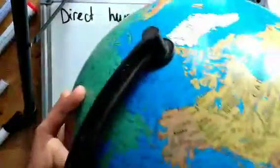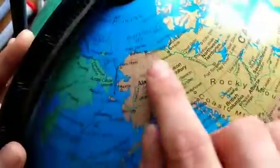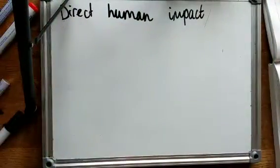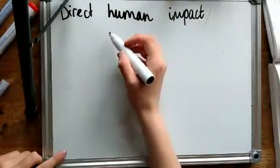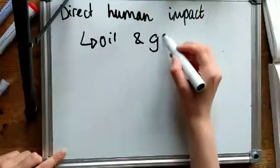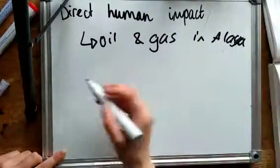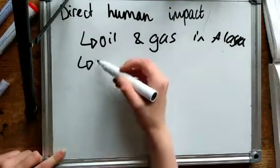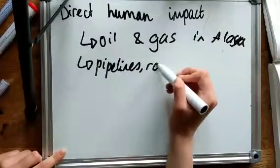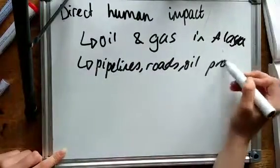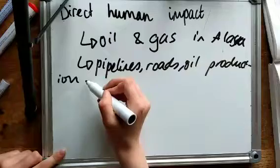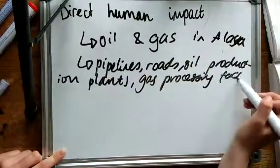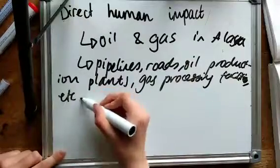So now on to some direct human impacts. So near Prudhoe Bay in Alaska, in the tundra, oil and gas were discovered. So people wanted to get this gas and oil, and so they constructed things such as pipelines, roads to get around the place, oil production facilities and plants, gas processing facilities, and so on and so forth, in order to get the oil and gas.